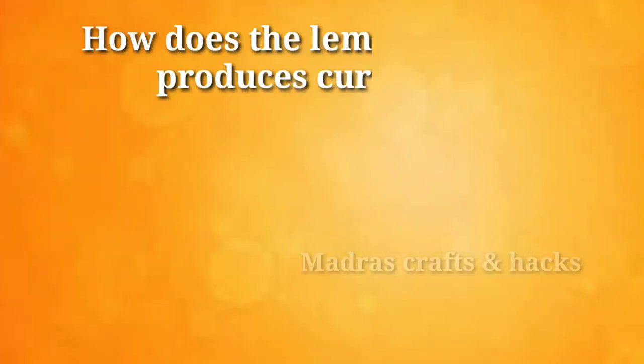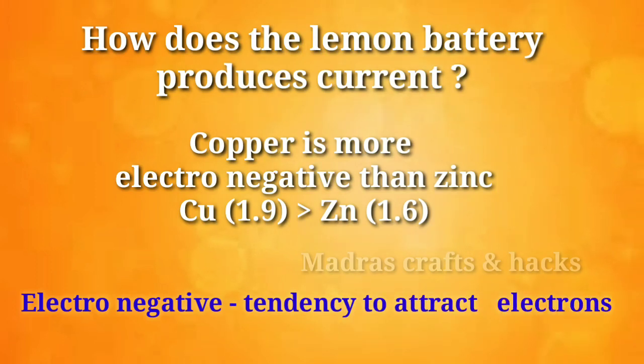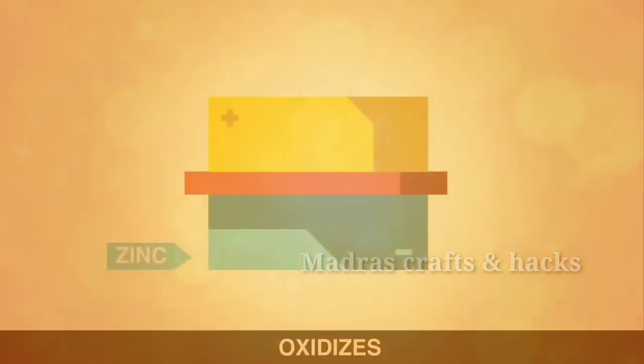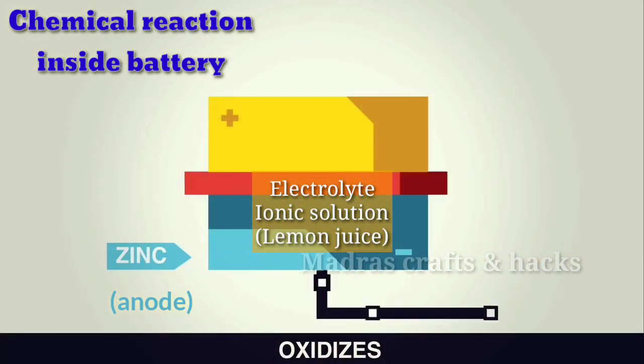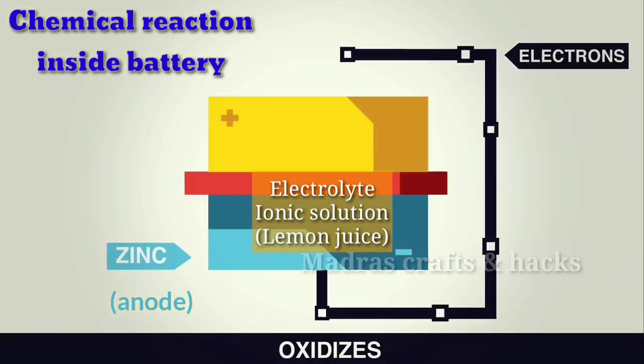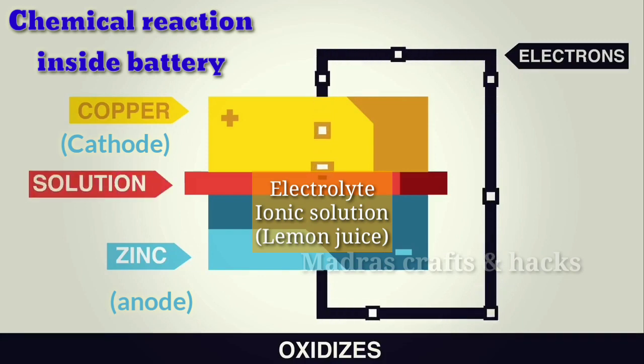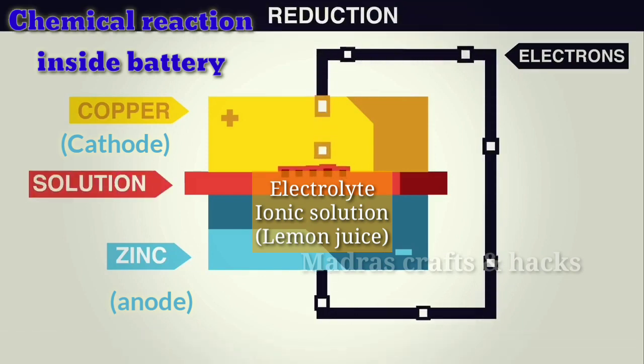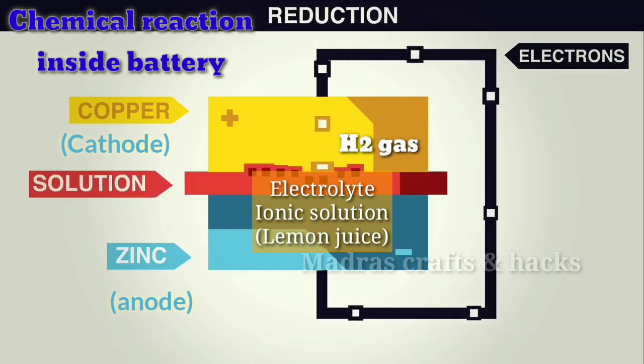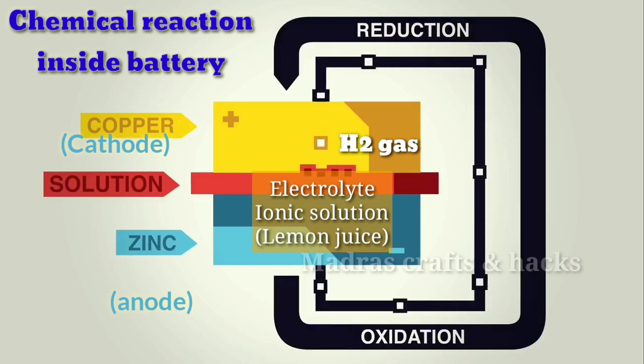How does the lemon battery produce current? Copper is more electron-attractive than zinc. Zinc oxidizes, which means it loses electrons which are in turn gained by copper, then by the solution, and produces hydrogen gas. The process is called reduction.